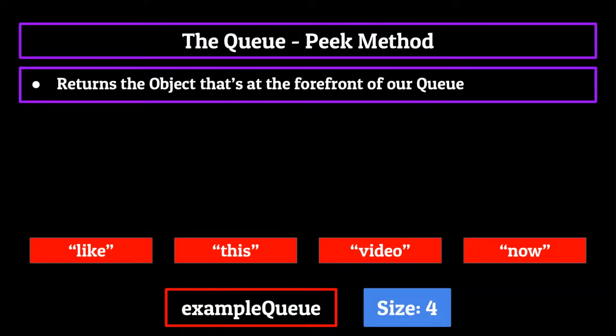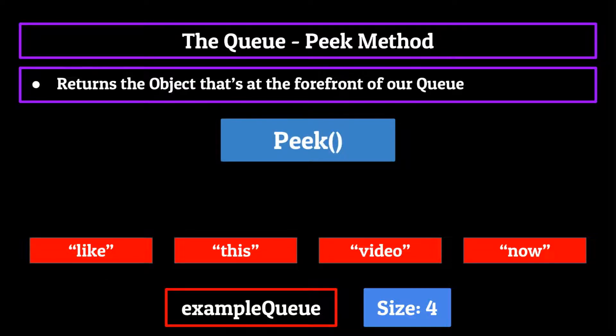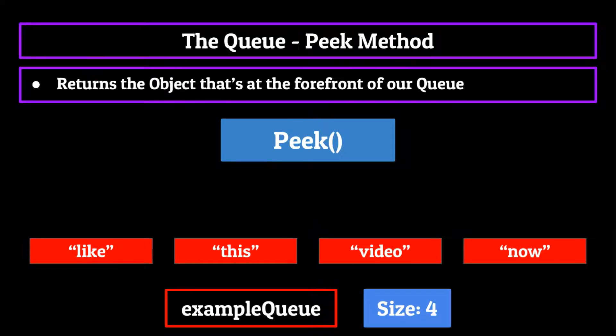The next method I want to discuss with you guys is peak. Now we've actually already talked about peak in our episode on stacks, but if you forget or just didn't watch that, peak returns the object that's at the forefront of our queue. It doesn't take in any arguments and will simply just return the foremost object of the queue, without actually removing it. The key word there being without. This method allows you to look at the top of the queue before you actually dequeue it, maybe to make sure the element you're about to dequeue is the correct one, or check to see if an element that you need is still there. Whatever the case is, you can use the peak method to do so.